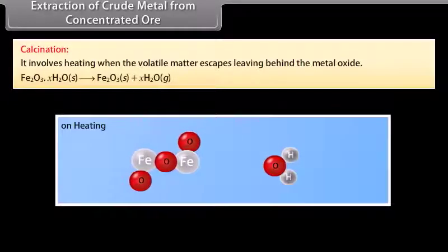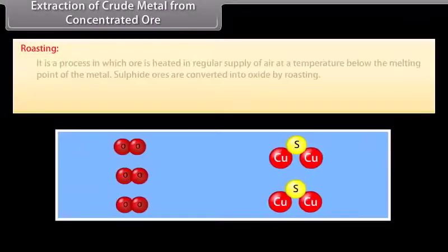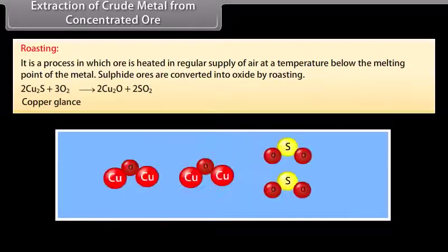Conversion of oxide. It is easier to reduce oxide than sulphide or carbonate ore. This can be done by two methods: calcination and roasting. Calcination involves heating when the volatile matter escapes leaving behind the metal oxide.